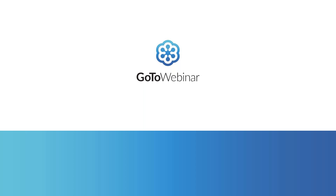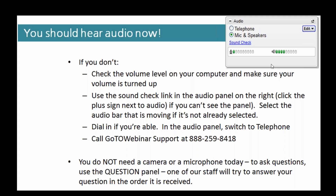Hello and welcome. You should be hearing my audio right now. If you don't, please check the volume level on your computer and make sure that your volume is turned up. You can also check your volume by going to the GoToWebinar control panel and do a sound check, and you can switch from microphone and speakers to a telephone or from telephone to microphone and speakers. If you continue to have difficulty with audio, you can go to the 1-888-259-8418 helpline for assistance.